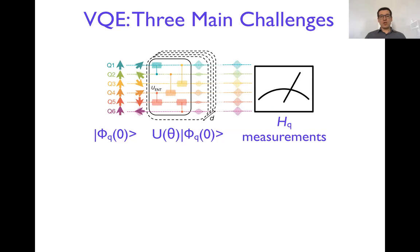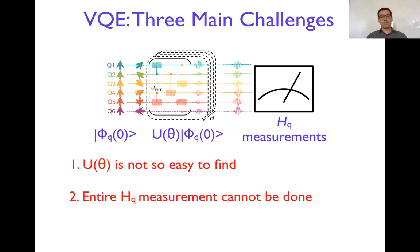Now there are three main challenges in this scheme. The first problem is that the unitary transformation is not so easy to find because it lives in the exponentially large space of all possible unitary transformations. The second problem is that Hamiltonian cannot be measured at once.